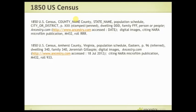This is how you cite the 1850 census. It's the 1850 US Census, then county name, state name, population schedule — this defines what type of document it is — then the city or district. In 1850 through 1870 it might say, for example, Amherst County, Virginia, Eastern District. Then the page and whether it's stamped or penned. When you look at the actual images, you'll notice sometimes the page number is stamped, sometimes penned, sometimes both — so put both. Then dwelling number, family number, person or people, Ancestry.com in italics, the URL, and when it was accessed — in case that document ever goes away.